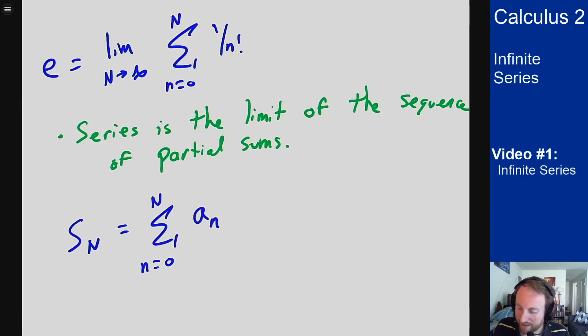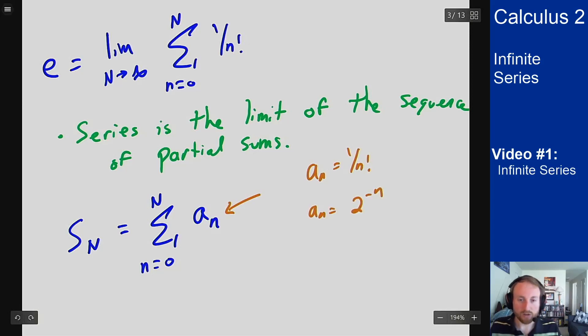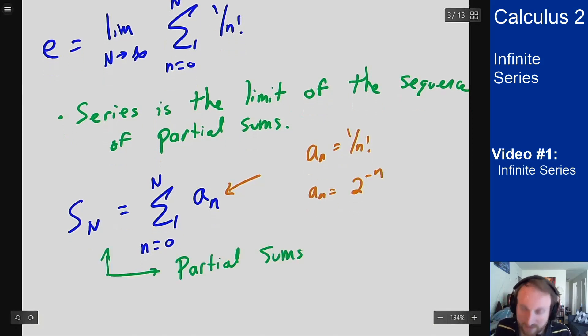As the sum of n equals zero up to capital N of my series. So this a_n could be anything. It could be any sequence. In the case above, we had a_n being 1 over n factorial. I could take a_n to be 2 to the minus n. These are all valid things to put in here. These are called the partial sums because they are the sum of part of the series, because they don't go all the way to the end, they only go up to N.